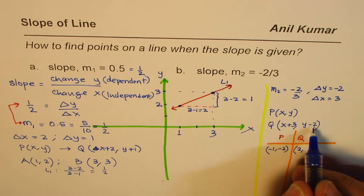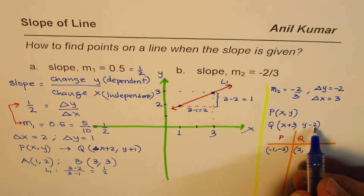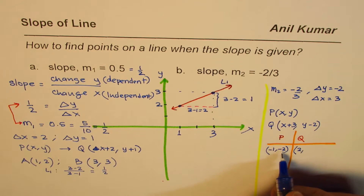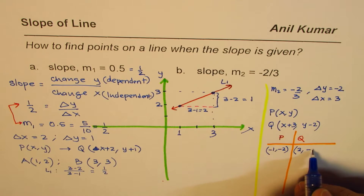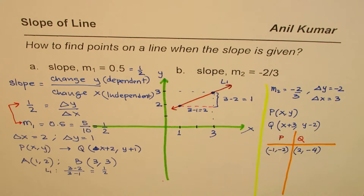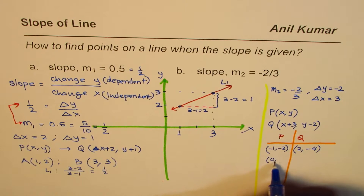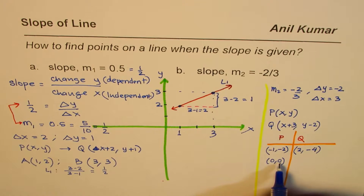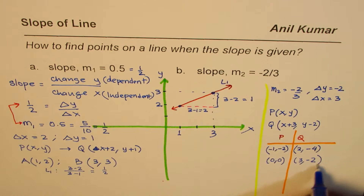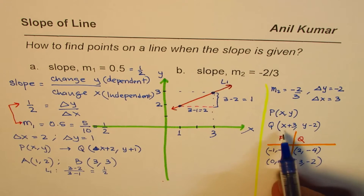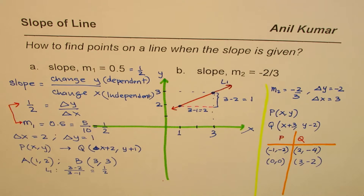For P at (minus 1, minus 2), Q has x-value of minus 1 plus 3 equals 2, and y-value of minus 2 minus 2 equals minus 4 — so Q is (2, minus 4). Taking the origin (0, 0) as another point P, Q becomes (3, minus 2). You can take any values of x and y and generate many such point pairs.